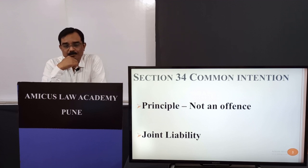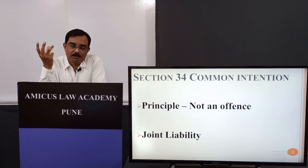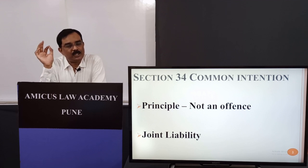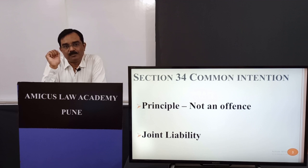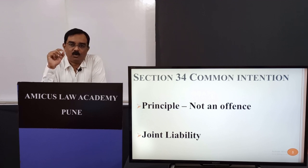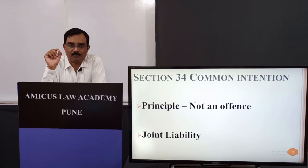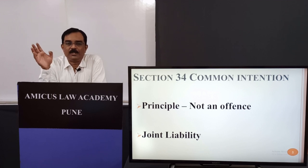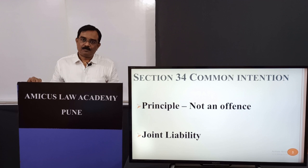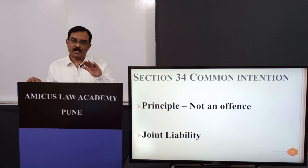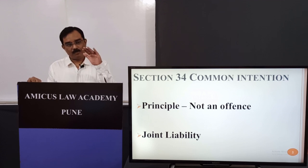Section 34 itself is not an offence. There will be a principal offence — for instance, stabbing a person with a knife. When Section 34 is applied, all persons who have participated in the crime, helped the criminal, or helped the offence will be liable. That is the principle of joint liability laid down by Section 34. It is a rule of evidence and a rule of fixing criminal liability.